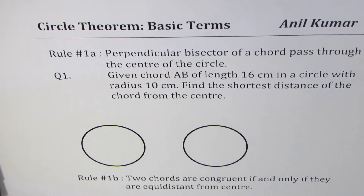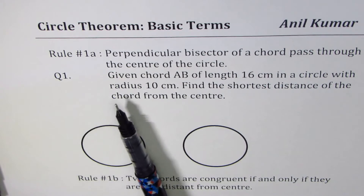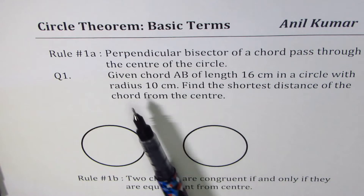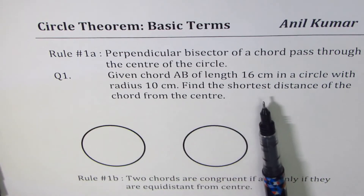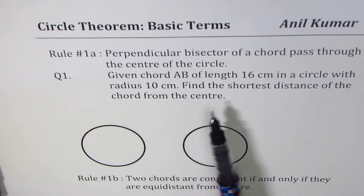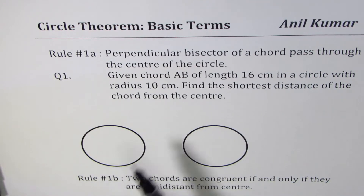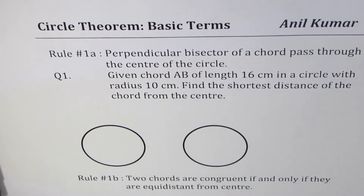Based on this rule we will answer Question 1: given chord AB of length 16 cm in a circle with radius 10 cm, find the shortest distance of the chord from the center. You can pause the video and try to answer this question. We will then define another rule related to Rule 1a — that is how we will develop our set of rules to help you answer questions on circle theorem effectively.